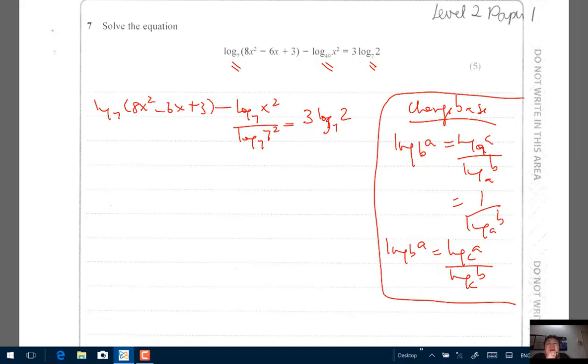So 3 log 2 to base 7. There you go. So now we're talking the same language. It is in sync. The whole equation is now expressed in terms of base 7.